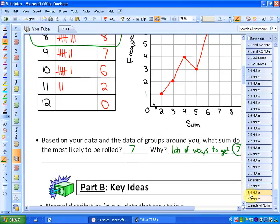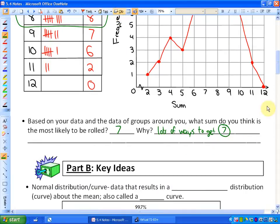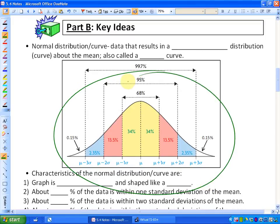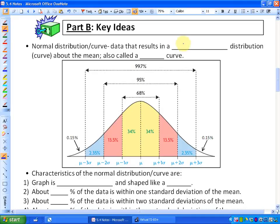So this is normal distribution, and it comes up quite often throughout all statistics. And that's what we're going to be investigating here. So the key idea here is what is normal distribution? And you might notice that this looks very similar to my class grades that I just showed you. Normal distribution, or curve, is data that results in a symmetrical,